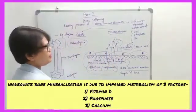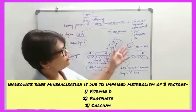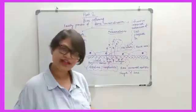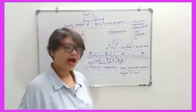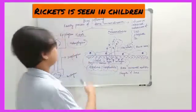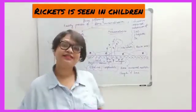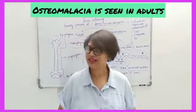The cause of the faulty process of bone mineralization is due to deficient or impaired metabolism of vitamin D, phosphate, or calcium. The consequences are either rickets in children or osteomalacia in adults.